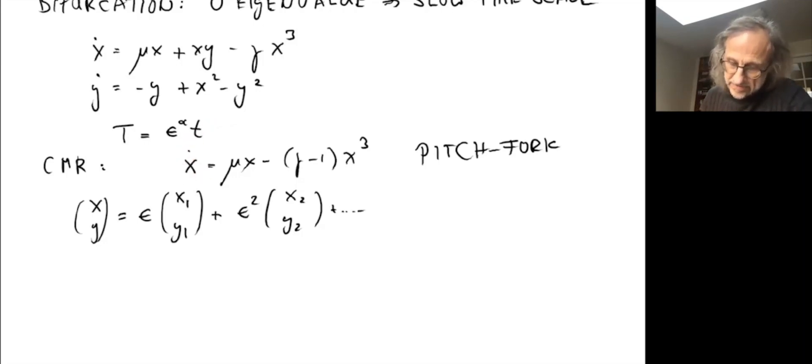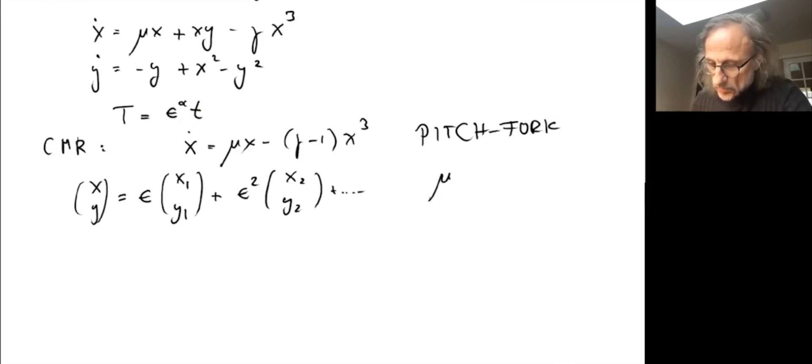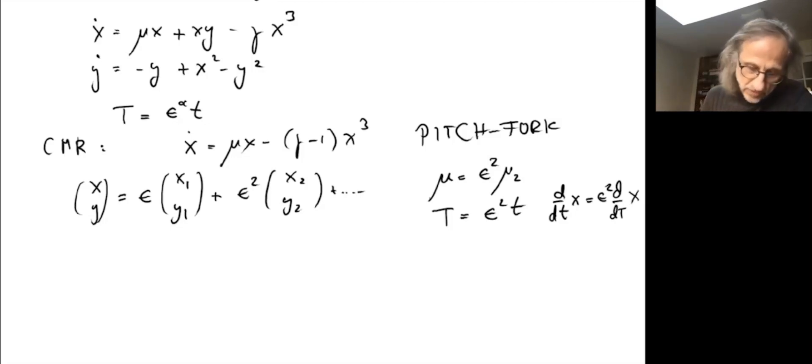That tells us we should choose μ order ε². So let me call it ε²μ₂. Similarly, the slow time T I take ε². That means the derivative with respect to the fast time becomes ε² times the derivative with respect to the slow time of all quantities. Now we can just start expanding and see what happens.